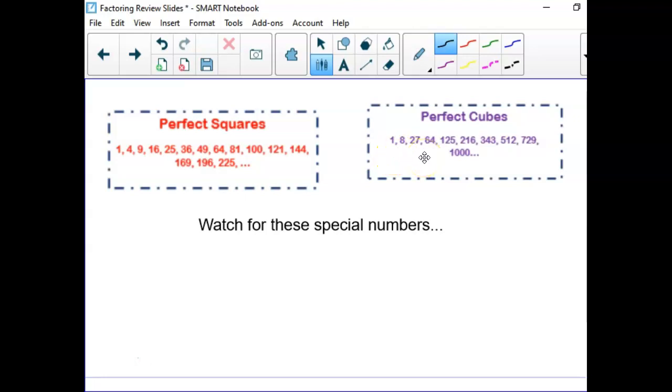1, 8, 27, 64, 125, 216, 343, 512, 729, 1,000. Okay, those are perfect cubes. Watch for those when we get there.